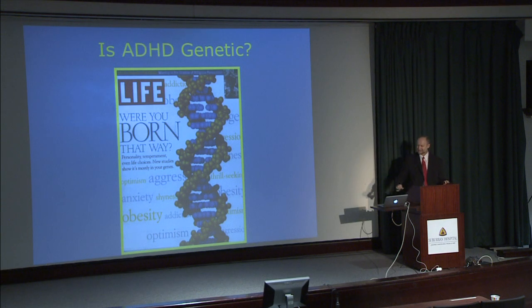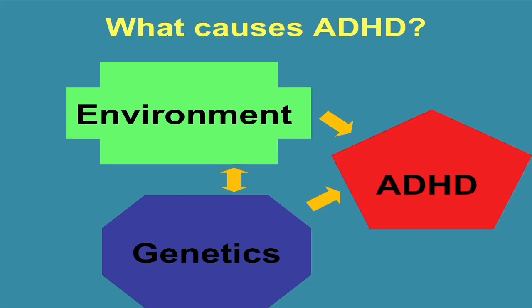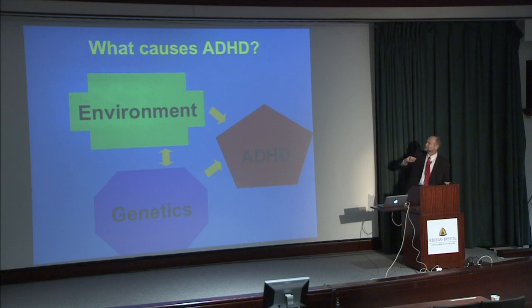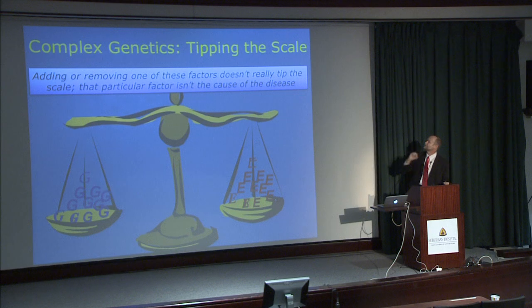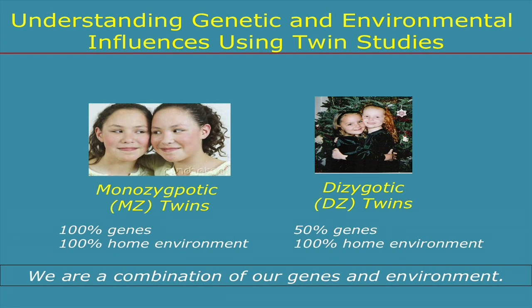ADHD is a complex genetic trait, and any complex genetic trait is caused by both genetics and environment. I would go as far as to say there is an interaction between the environment and the genes, and from the genes to the environment. It doesn't help to think there is one gene that, if you could fix it, would cure the disease — it's certainly not that easy. To better understand the genetics of complex traits, we need to look at what twins tell us.